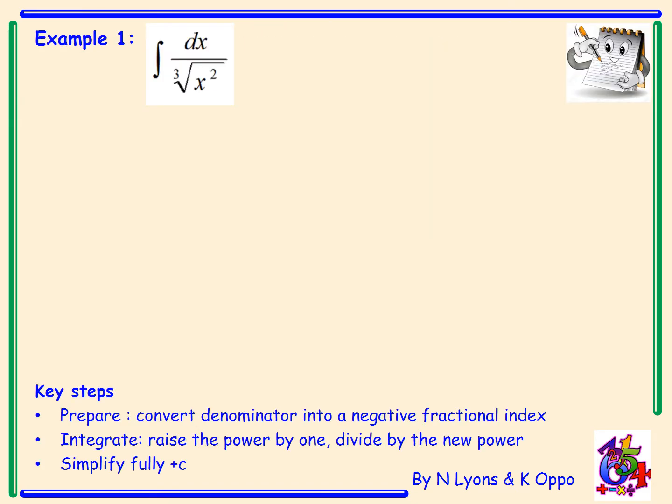Example 1. Here I've got the integral of 1 over the cubed root of x squared with respect to x. Now our key steps say that we need to prepare first, so in this example we're going to have to convert the denominator into a negative fractional index. Then we can simply integrate as normal.